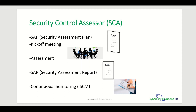The next step is a kickoff meeting. This is a meeting between the security assessor and the team that is trying to get an ATO — Authority to Operate. The whole point of the ATO process is getting permission to use a particular system on the network.